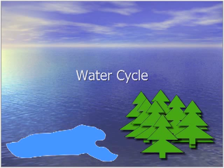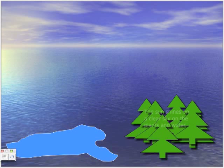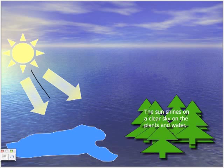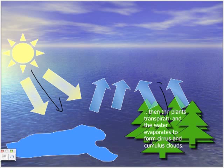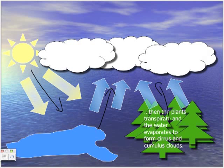Water cycle. So you can see here in the water cycle, the sun is already doing its thing — it's shining on the water, causing it to evaporate. You can also see the plants are transpiring and the water is evaporating. That makes clouds.